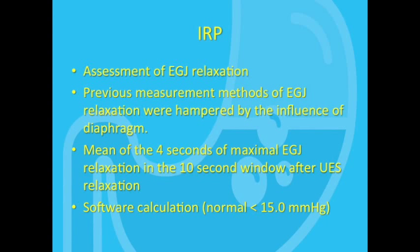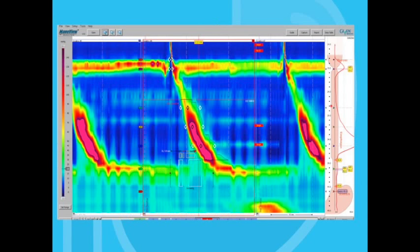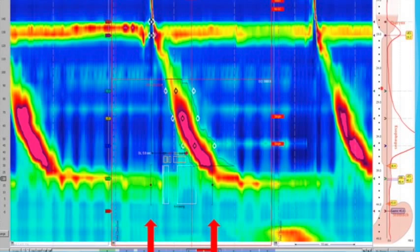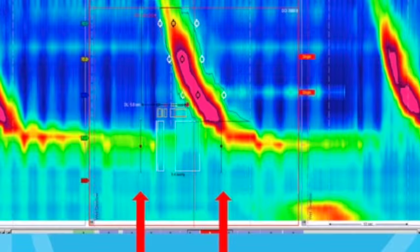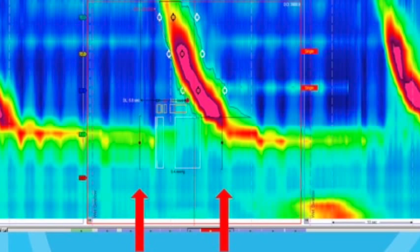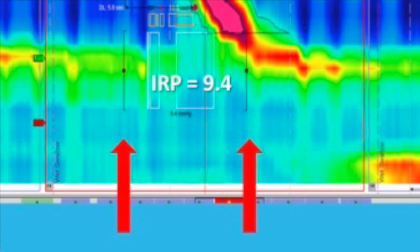Fortunately, the ManoView software does this calculation for us. You can see on this slide that the software detects the timing of the UES relaxation with swallow, it's the first red arrow, and then it looks for the lowest pressures in the 10-second window immediately after the start of the swallow, and does the calculation doing the integration over 4 seconds. In this case, the IRP comes out to 9.4, which is normal. In our lab, a normal IRP is less than 15 millimeters of mercury.